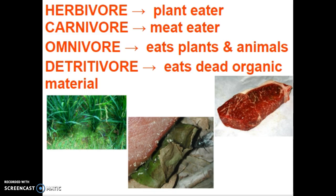Detritivores — detritus in Latin means garbage or waste — can also be called scavengers. They eat dead organic material and are kind of the recyclers of the ecosystem. An example of an herbivore would be a deer; a carnivore would be something like a wolf; a great example of an omnivore, besides people, are bears; and detritivores would be the various types of microorganisms or bacteria that live in the water or soil of ecosystems.